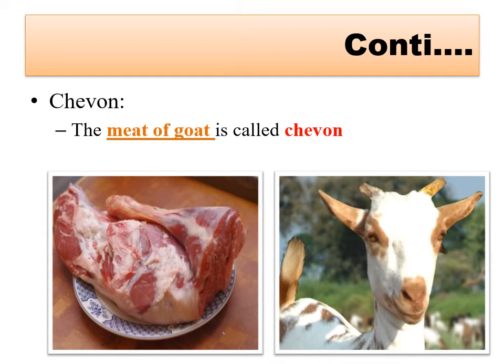The meat of goat is called chevon. In the case of sheep it is called mutton, while in the case of goat it is called chevon.